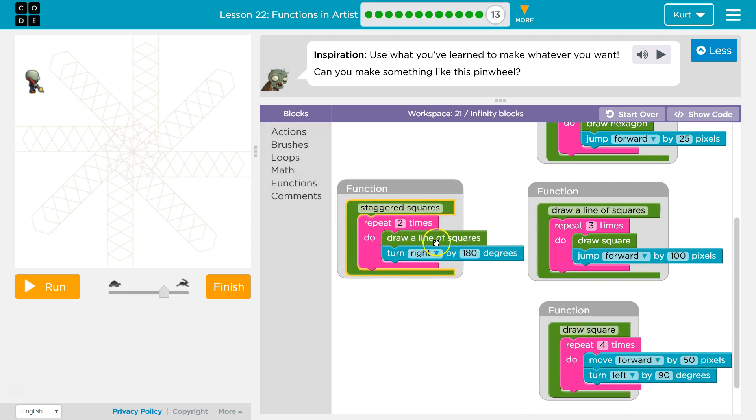So staggered squares two times, draw a line of squares. So that goes zoop. And then what does it do? It repeats this three times. We're going to draw a square. What's that do? Zoop. Four times over, it repeats drawing each side. Once that's done, it draws four sides. We jump a hundred and then zoop. And then do this all over. So we draw three squares across.